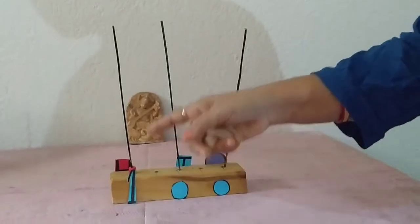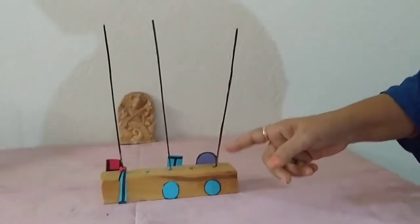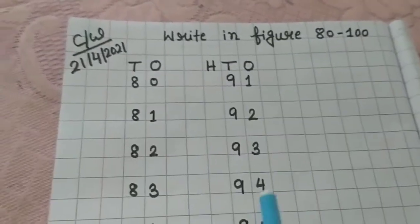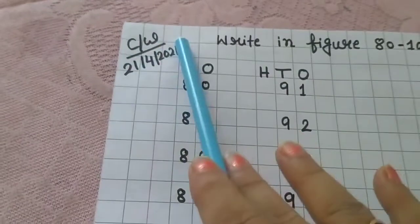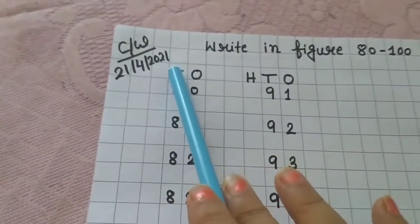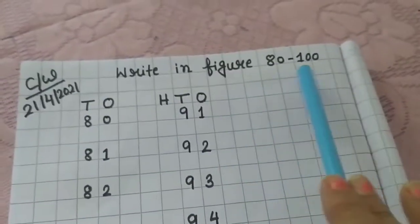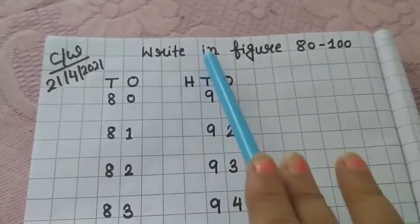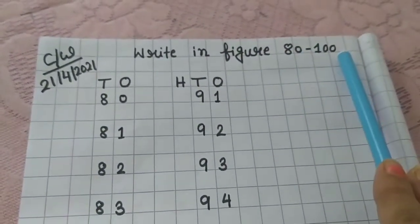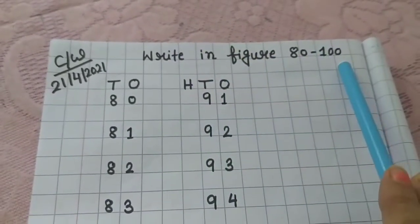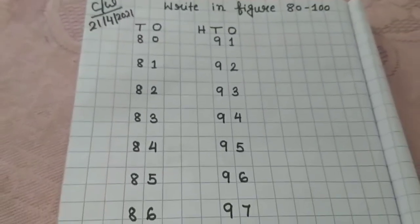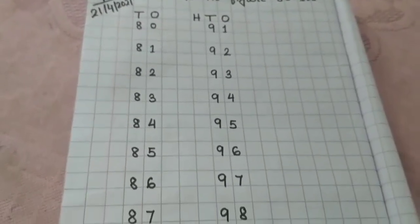Please everybody, take your school copy. And just see, here I have written CW and I have given the date also. 21-4-2021. And for heading, I have written write in figure 80 to 100. And just see, how I have done my written part.